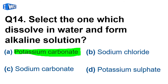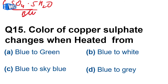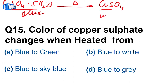Potassium carbonate quickly forms a basic solution. Next question: the color of copper sulfate changes when heated. Copper sulfate in its hydrated form is blue in color. When it is heated, all the water of crystallization is removed, and only anhydrous copper sulfate remains. Because the blue color comes from the water, the color changes from blue to white.